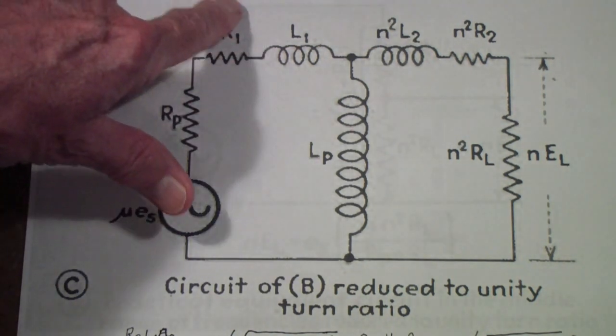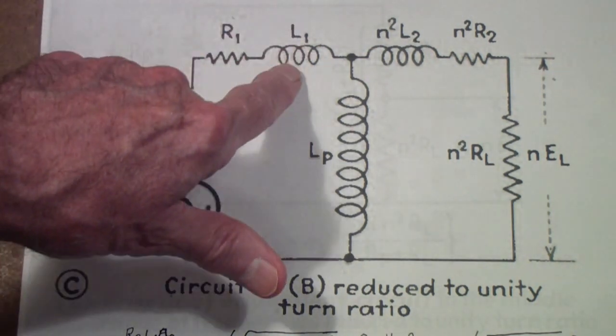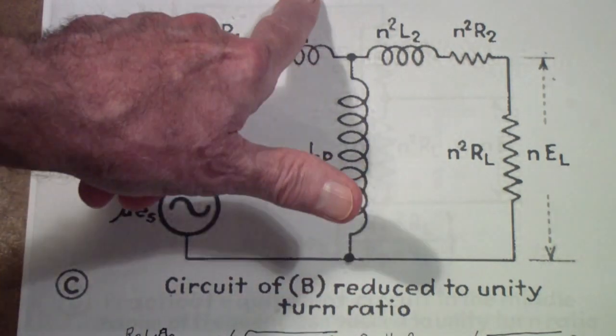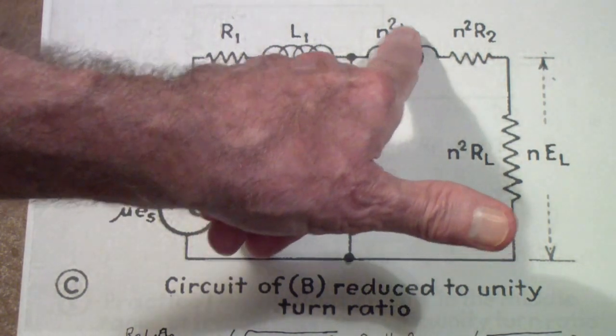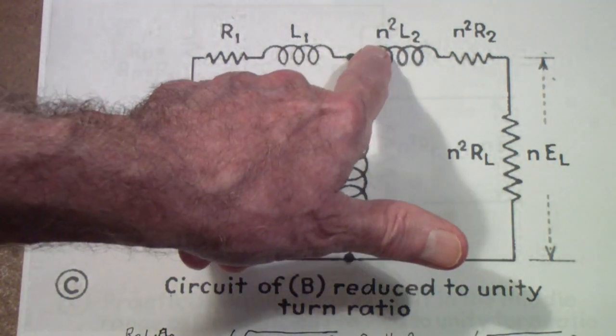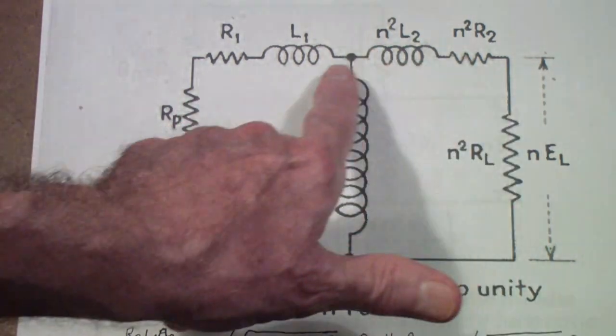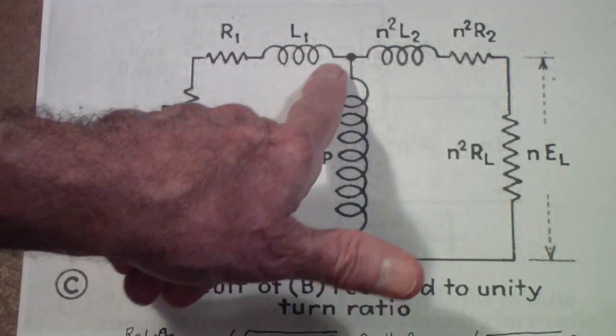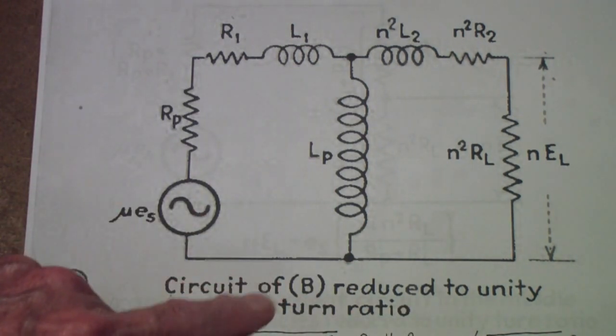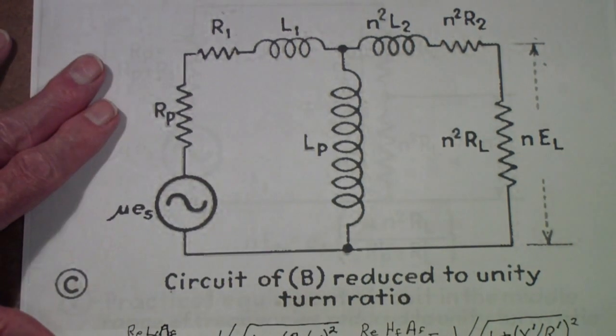Then, L1 prime is L1, that's the leakage inductance of the primary, plus N2 times L2, where L2 is the leakage inductance of the secondary. So, when you multiply by N2, it's reflected into the primary. So, now it's just part of the primary. If you assume that the turns ratio is unity, in other words, one to one.